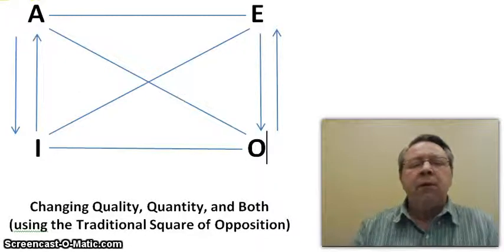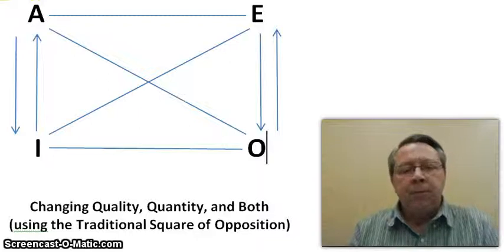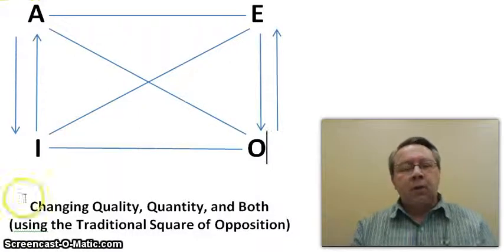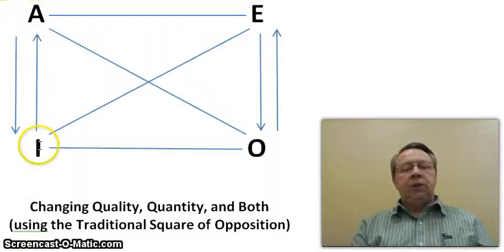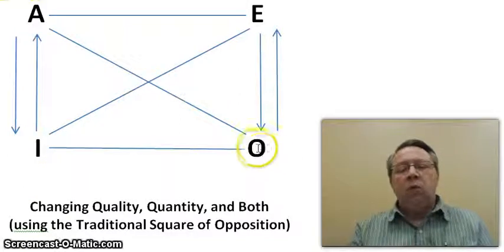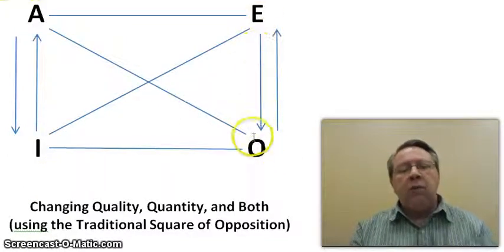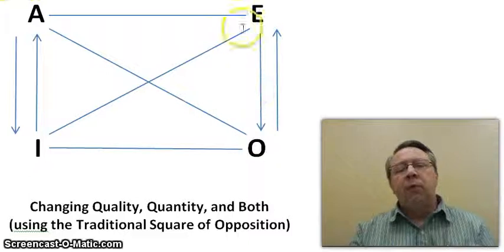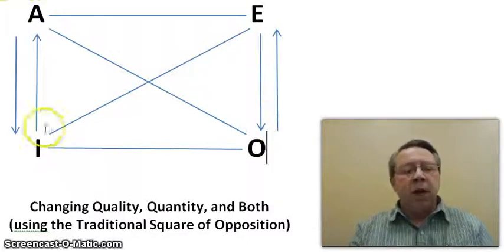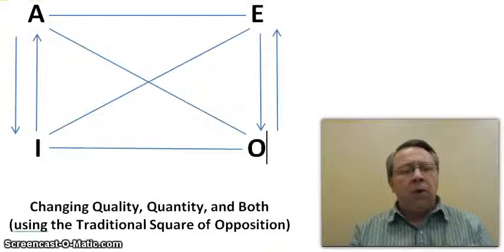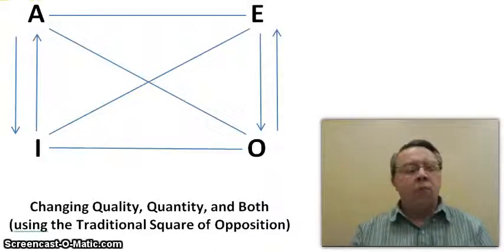Think of this in terms of an etch-a-sketch when you were growing up. There was one knob that went right to left, which would change the quality. One knob that went up and down, which changed quantity. But if you turn both knobs, you could go on the diagonal. So keep the etch-a-sketch in mind as you think about this. Hopefully this has been informative and will help you with your homework assignment for 4.2.